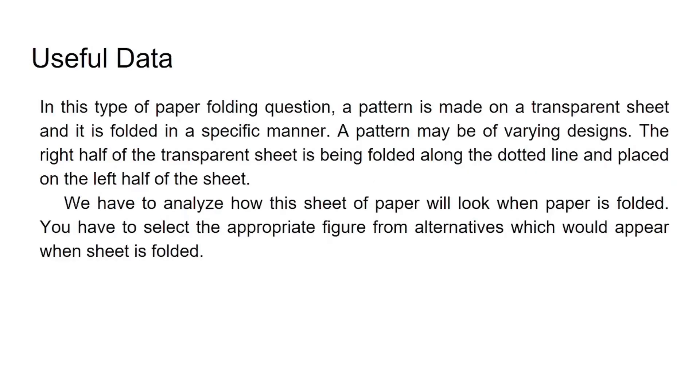In this type of paper folding question, a pattern is made on a transparent sheet and it is folded in a specific manner. A pattern may be of varying designs. The right half of the transparent sheet is being folded along the dotted line and placed on the left half of the sheet or vice versa.